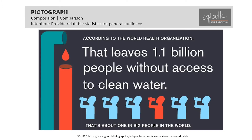Pictographs use picture symbols to represent statistical information. This allows us to visualize composition or do comparisons. Often these are used because they can help make the data points more relatable. This example is from the website Good.is, and was created by a contributor named Column 5. In this example, the designer used an image of people drinking water to convey the message. One of the six icons is colored red, depicting that one in every six people do not have access to clean water.